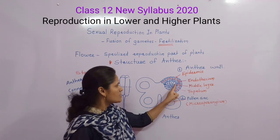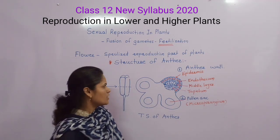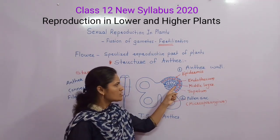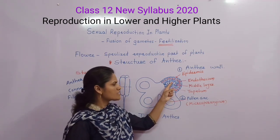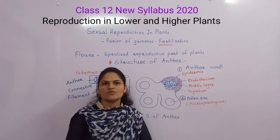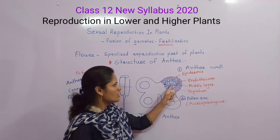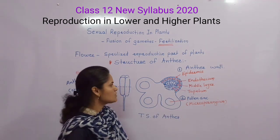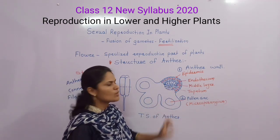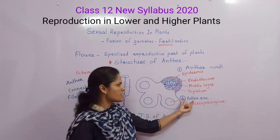Tapetum consists of nutritious cells and is pyramidal in shape. Tapetum helps provide nutrition to the developing tetrads, developing spores, and pollen grains.